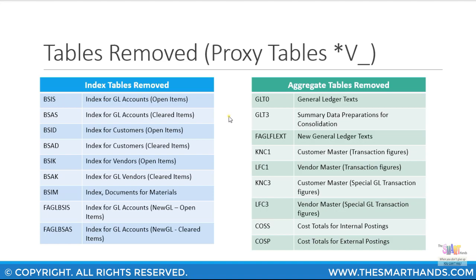These tables are not completely gone from S/4HANA — they have something called a proxy table, and sometimes the table name starts with V underscore followed by the table name, for example V_COEP. Or if it's a fixed asset table it could be like FAAV_ANEP and so on. Some of the legacy index tables include BSIS, BSAS, BSID, BSAD — relevant to GL open items, customer open items, and vendor open items — as well as new GL open item tables such as FAGLBSIS, FAGLBSAS, and so on.